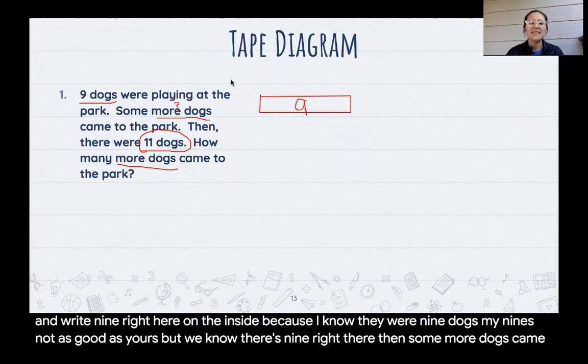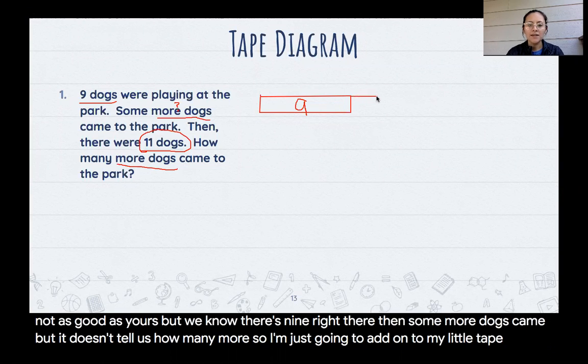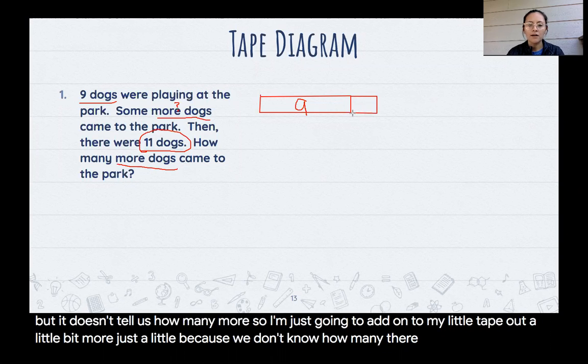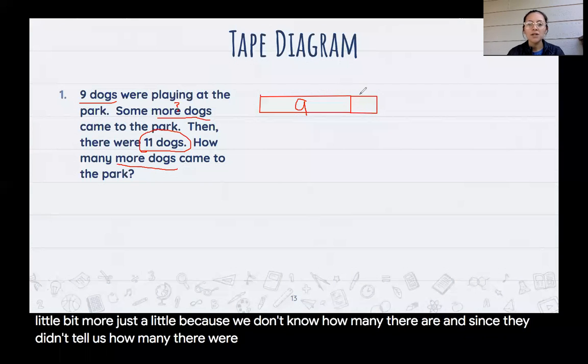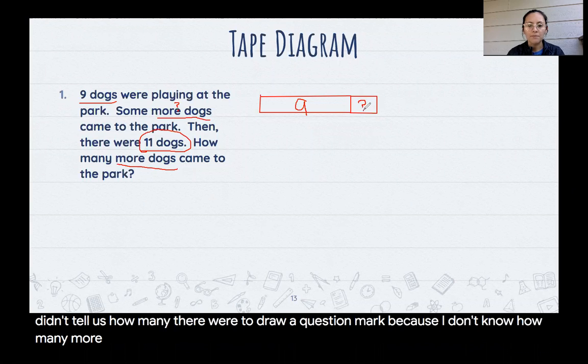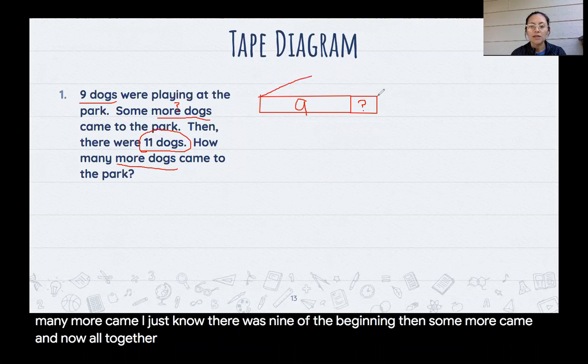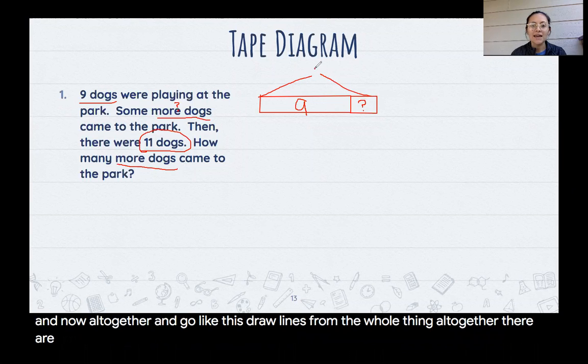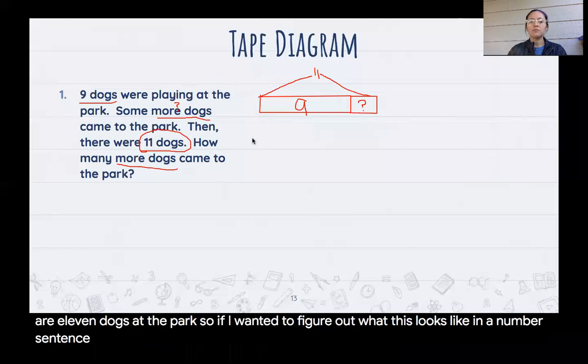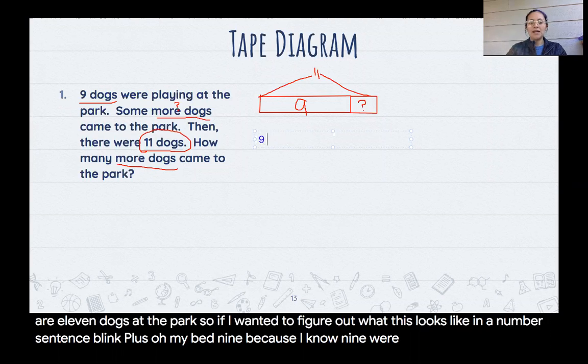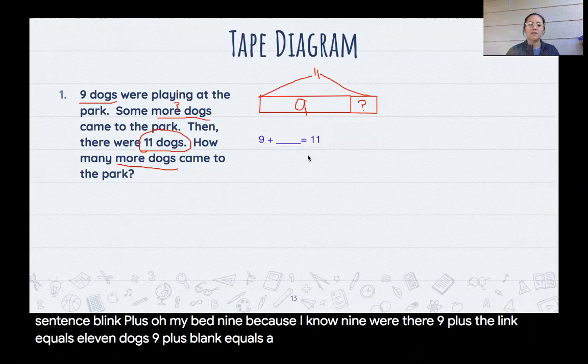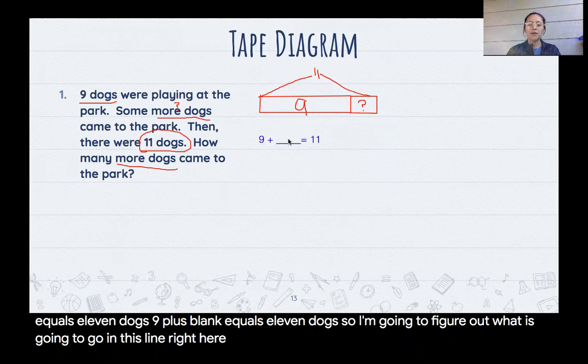Then some more dogs came, but it doesn't tell us how many more. So I'm just going to add on to my little tape, add a little bit more, just a little, because we don't know how many there are. And since they didn't tell us how many there were, I'm going to draw a question mark because I don't know how many more came. I just know there was nine at the beginning, then some more came. And now all together, I'm going to draw lines from the whole thing. All together, there are 11 dogs at the park. So if I wanted to figure out what this looks like in a number sentence, I might write 9 plus blank equals 11 dogs.